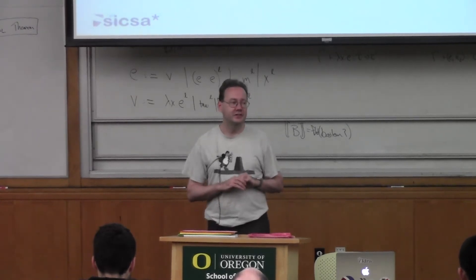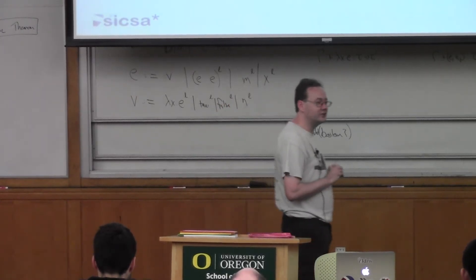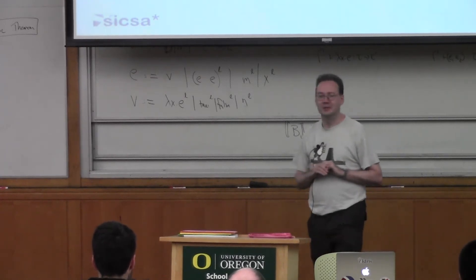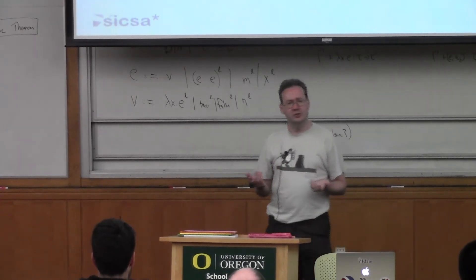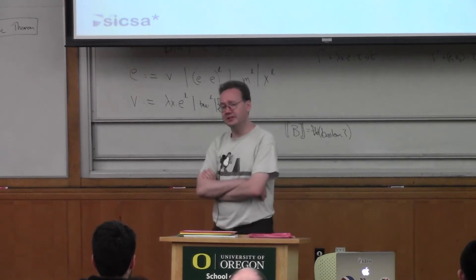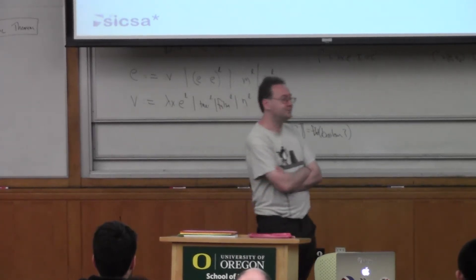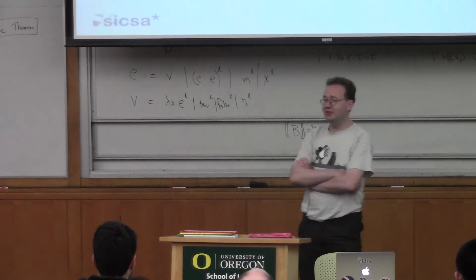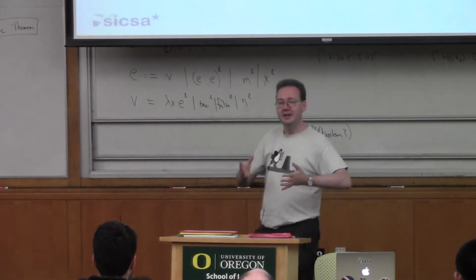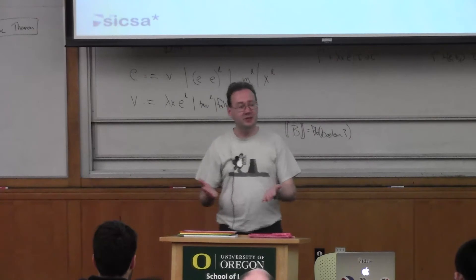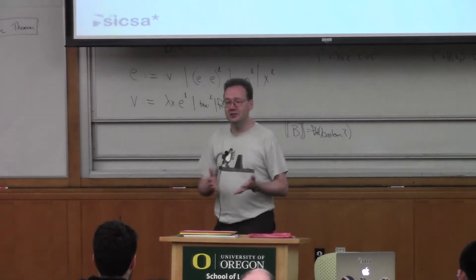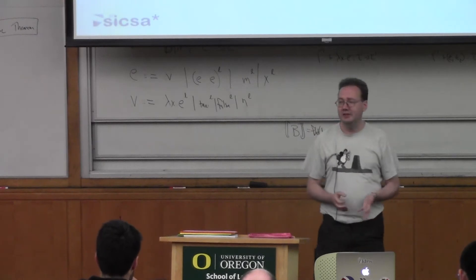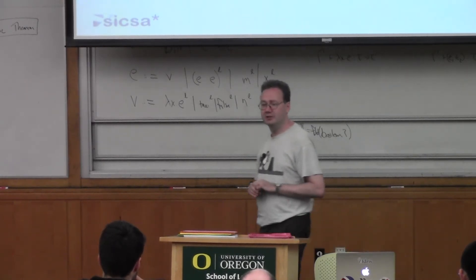I really like this idea of the language strangeness budget. Steve Padnick wrote a blog post about it: if you're implementing a new language, you have to think about who your target audience is and how many things they're willing to tolerate that they don't have in their current language. There's only a certain number of strange things you can do, and by having dependent types we've basically already blown the language strangeness budget.